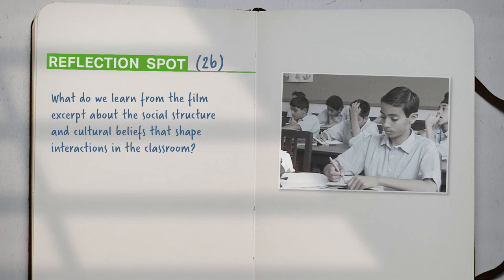Think for a moment and note down your answers. Some of you may say that the classroom is a hierarchical space with a clearly defined structure, with the teacher as an authority figure. Some others may say that the classroom interactions are defined by rules such as raising hands or not speaking out of turn. You might also have noted that the structure sometimes dissolves and it becomes a less formal space. But how did we learn all of this from this short video clip?